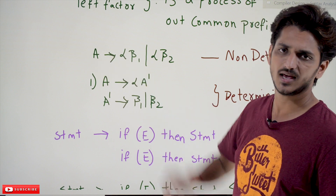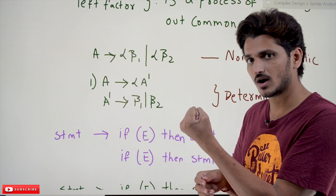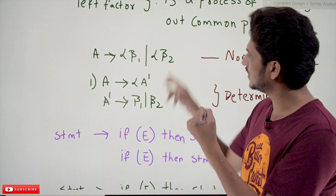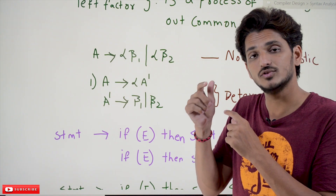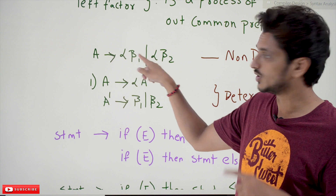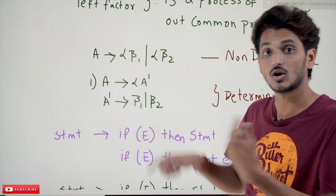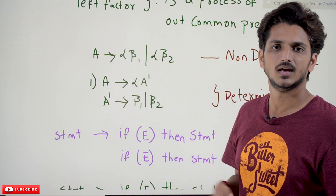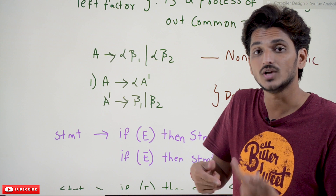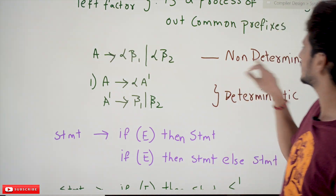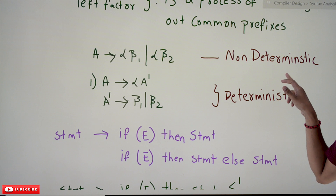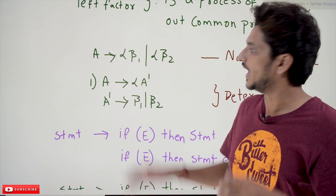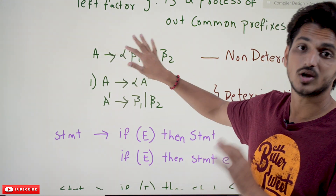What this context-free grammar says is: if you expand the production A and find the input symbol alpha, you can call beta1. The second production says if you find the input symbol alpha, you can call beta2. Here we are having a confusion — if you find the input symbol alpha, you have two options: beta1 or beta2. This common prefix is causing confusion, making this a non-deterministic grammar.